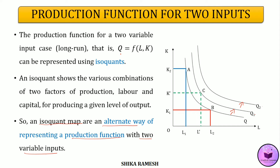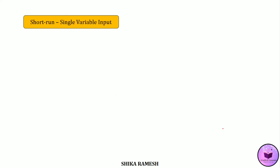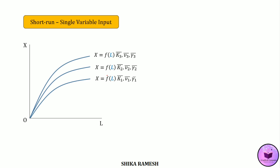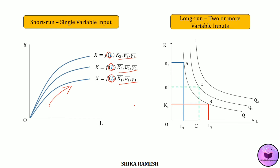From the isoquant map, the firm can decide which level of output to produce and which factor combination to choose based on factor prices. In short, in the short run we explain the change in total output due to change in a single input with all other factors held constant, which gives us an upward sloping production function. In the long run, when all factors are variable, the various combinations of labour and capital are represented by an isoquant or isoquant map.